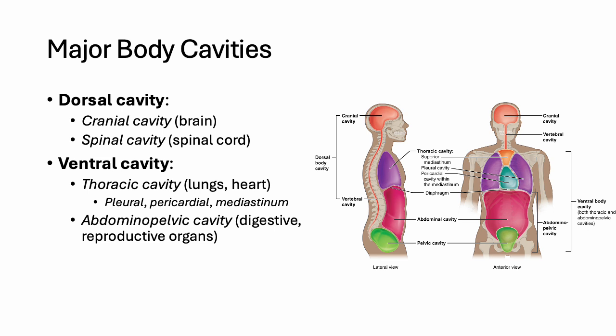The body is organized into different cavities that house major organs. These cavities help protect organs and allow them space to move — for example, your lungs expand into the thoracic cavity, and your intestines shift around the abdominopelvic cavity during digestion. The dorsal cavity has two main parts: the cranial cavity, which includes the brain, and the spinal cavity, which includes the spinal cord. The ventral cavity includes two major regions: the thoracic cavity, which houses the lungs and heart, subdivided into the pleural region, pericardial region, and mediastinum. The abdominopelvic cavity contains the digestive and reproductive organs.